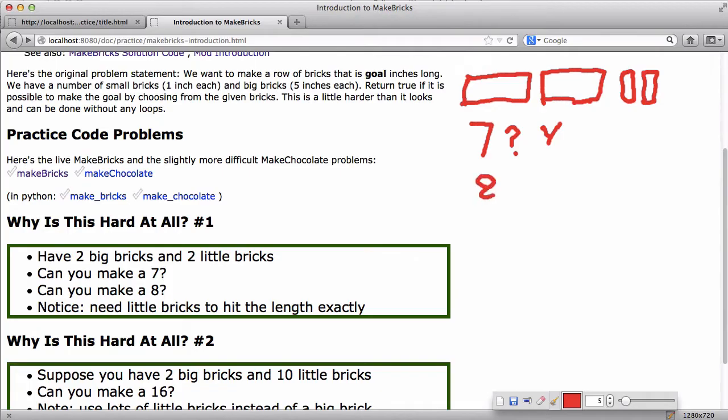So could you make eight? And at first it seems like you could make eight because you've got twelve, right? Two fives and two ones.